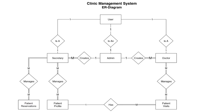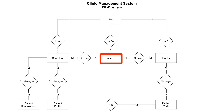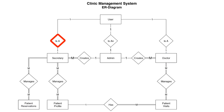The user can be a secretary, admin, or a doctor. The relationship between the user and the secretary is one-to-one, because only one user can map to one secretary, and the same goes for the doctor and the admin.